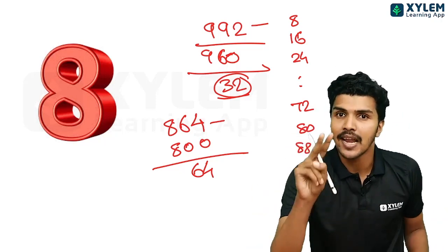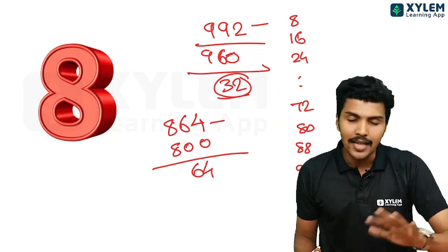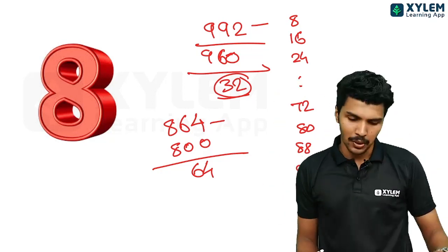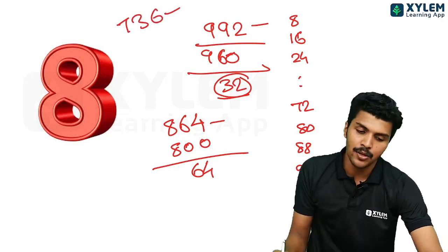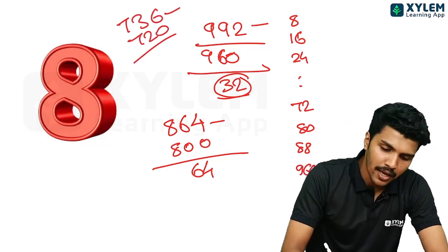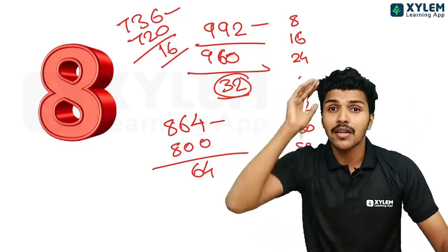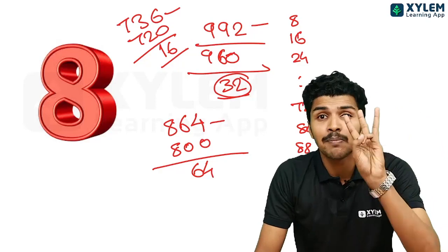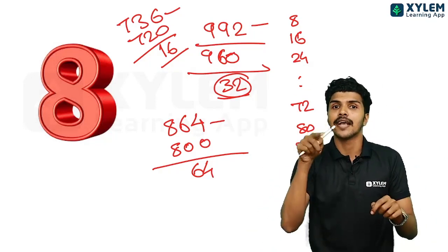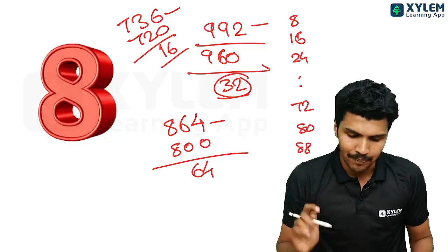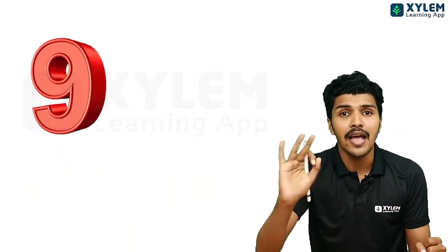If you multiply the two digits, you multiply the two — that is a multiple. 736 is a multiple. 720 is a multiple. 16 is a multiple. How many times do you multiply? There are three times. In 4 times there are two times. If you multiply three times and 3, it is wrong.